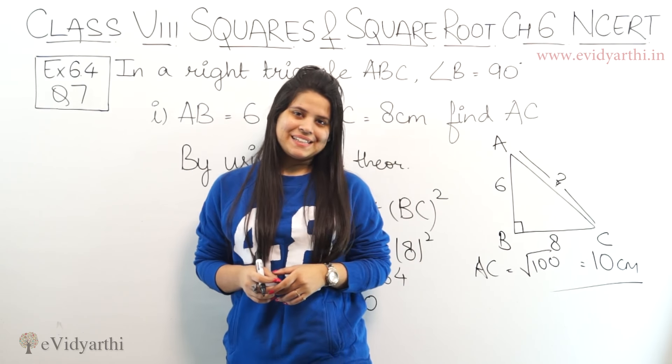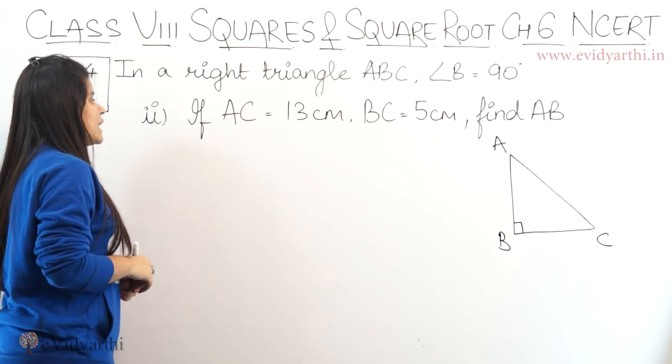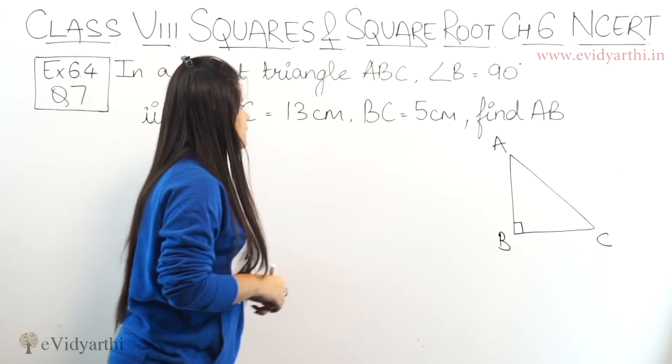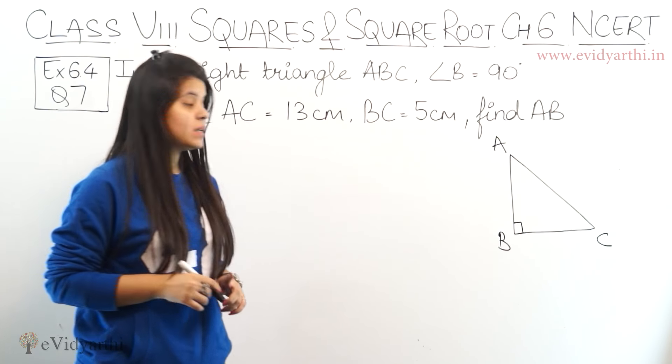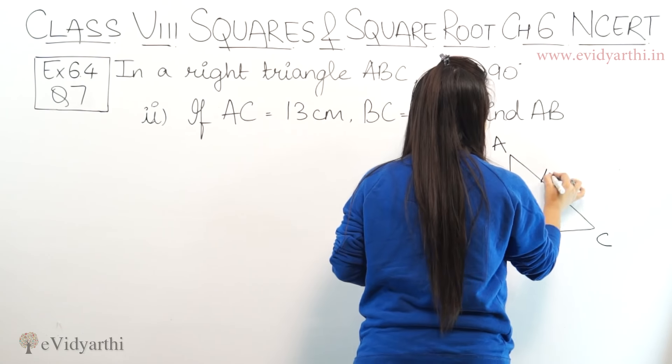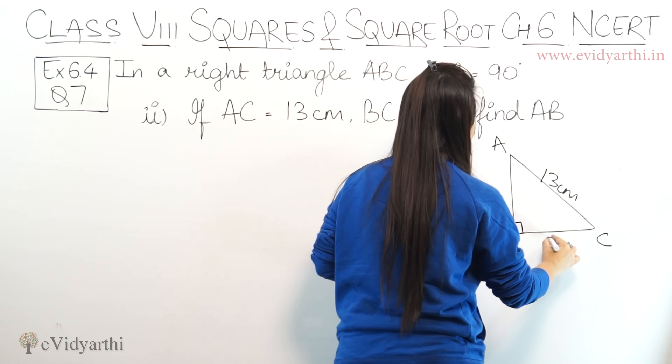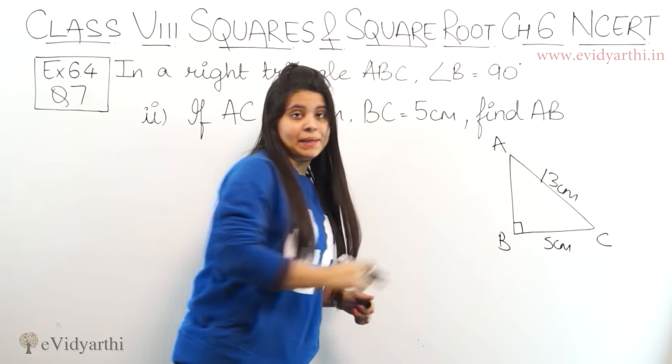Now let's come to the next part. In the second part, AC equals to 13 centimeters, BC equals to 5 centimeters, find AB. Here you have AC is 13 centimeters, then BC which is 5 centimeters, and you have to find AB.